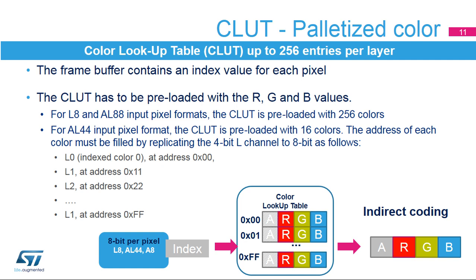A color key RGB can be configured to be representative for a transparent pixel. If color keying is enabled, the current pixels — after format conversion and before blending — are compared to the color key. If they match the programmed RGB value, all channels ARGB of that pixel are set to 0. The color key value can be configured and used at runtime to replace the pixel RGB value. Color keying is enabled through the LTDC_LxCKCR register.